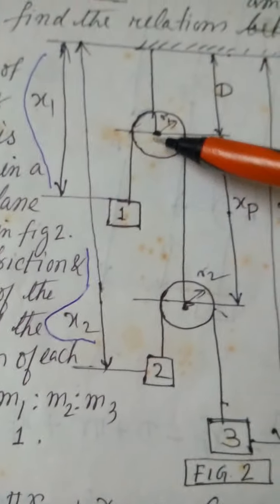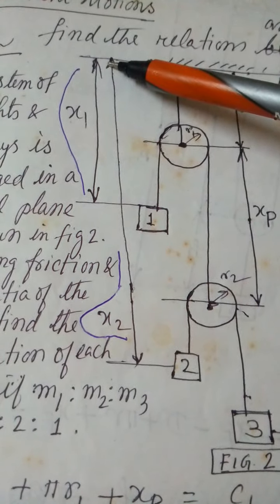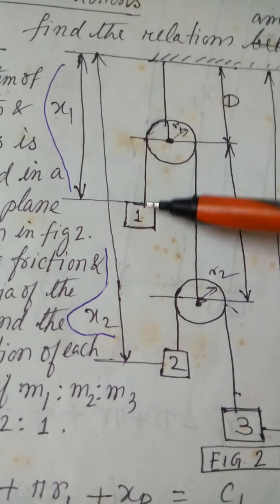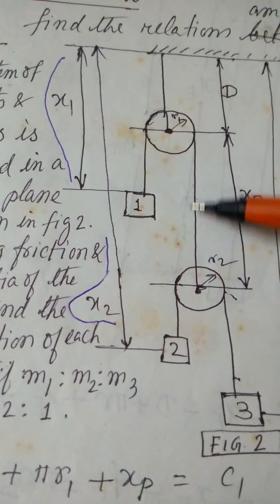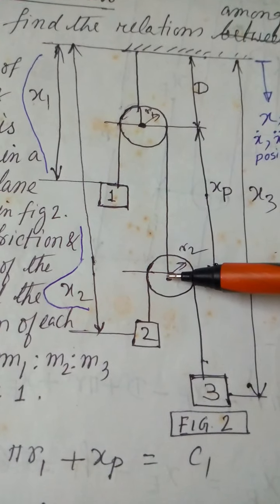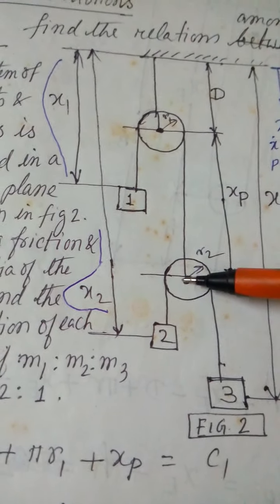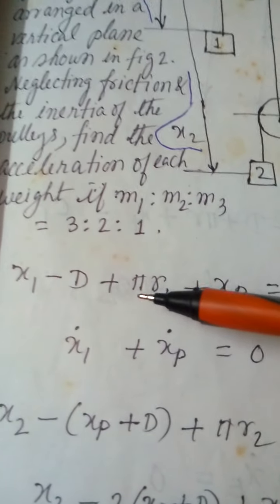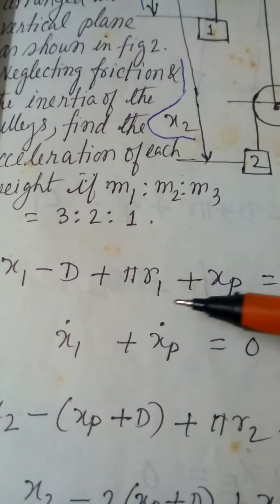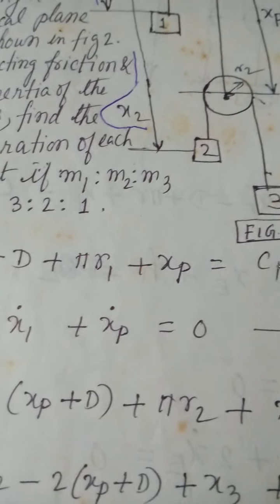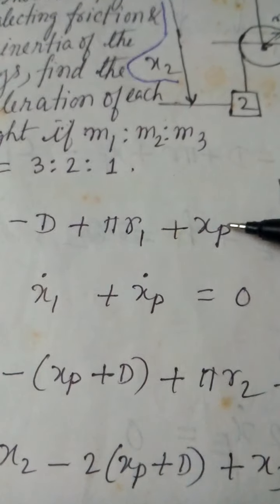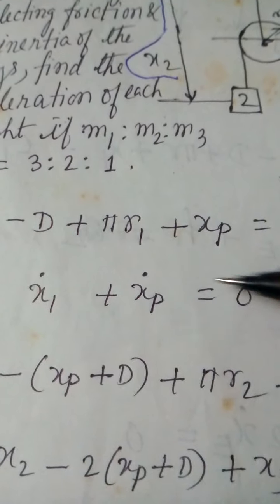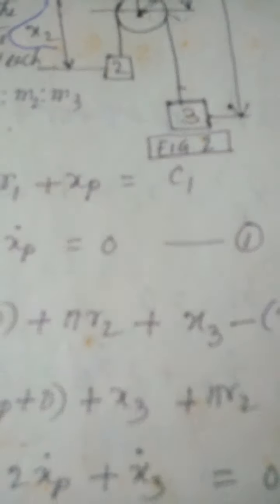We start with the constraint that the length of string over the first pulley is constant. The length is: x1 minus d, plus pi*r1, plus xp, equals a constant. Here d is constant, r1 is constant, but xp is variable. Taking the time derivative gives x1_dot plus xp_dot equals zero. This is Equation 1.